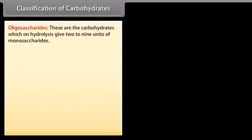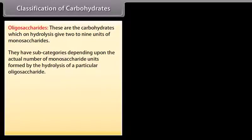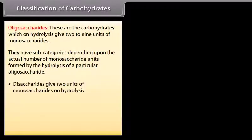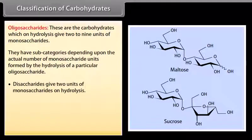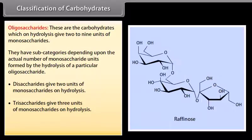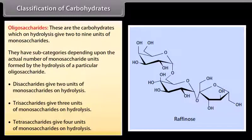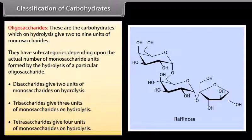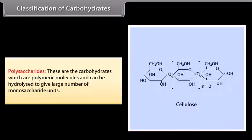Oligosaccharides are carbohydrates which on hydrolysis give two to nine units of monosaccharides, with subcategories depending upon the actual number of monosaccharide units. Disaccharides give two units — for example, maltose and sucrose. Trisaccharides give three units — for example, raffinose. Tetrasaccharides give four units — for example, stachyose. Polysaccharides are polymeric molecules that can be hydrolyzed to give a large number of monosaccharide units — for example, starch, glycogen and cellulose.